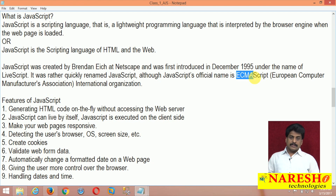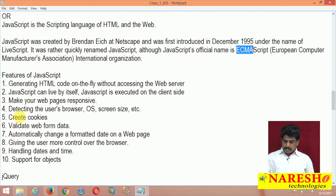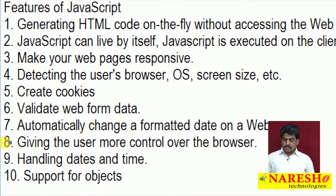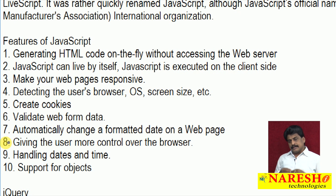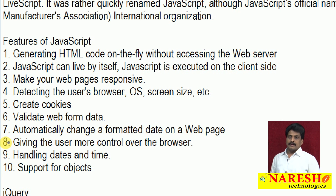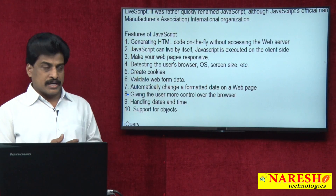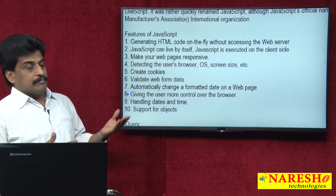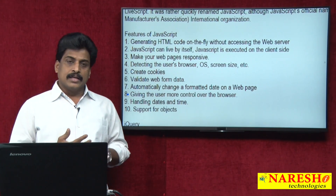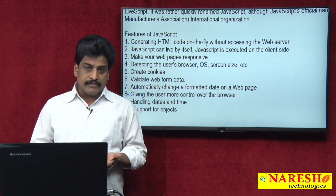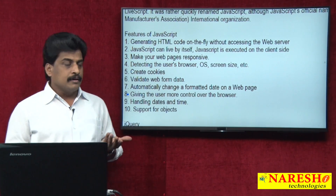There are several features of JavaScript. JavaScript is completely client-side — any information you can track with the help of JS. It is capable of generating HTML code. HTML and CSS by themselves are static; with the help of JavaScript, we make them dynamic.